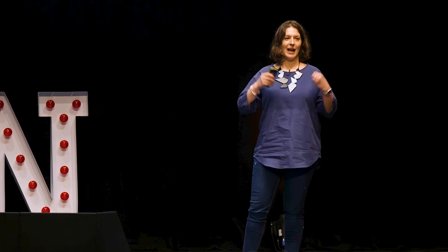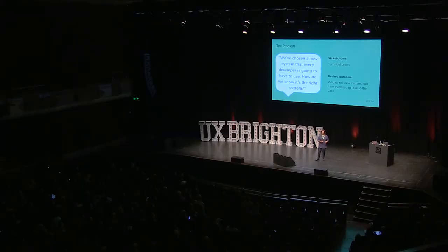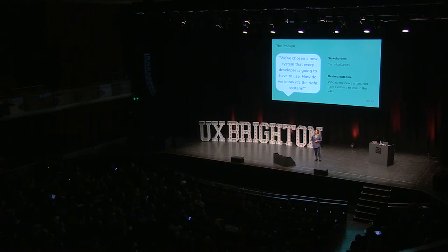The last case study is making sure the technical solution we've chosen is the right one — my favourite one. The situation: we've chosen a new system that every developer is going to have to use. How do we know it's the right system? This is a classic 'brilliant solution before understanding the problem' situation. In this particular company, they were trying to find a better way for developers to write and release their own code without going through a bottleneck that existed. There were 80 engineers in the company, so that's quite a lot of people to onboard to something brand new. The CTO tasked the technical leads with finding an off-the-shelf solution. It was going to cost a lot of money, be a massive upheaval — so how do we know we've chosen the right solution?